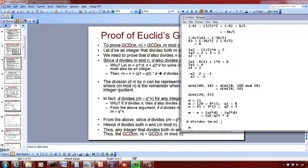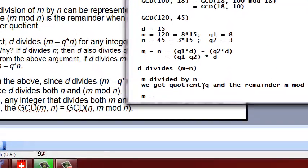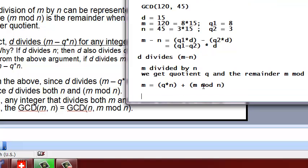Now, when you divide m divided by n, we get a quotient q and the remainder is m mod n. So I can represent that as m equals, when you divide by n, it's q times n plus m mod n. So this is what it is, we divide m by n.